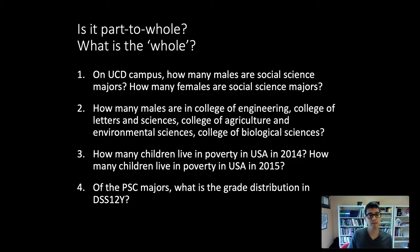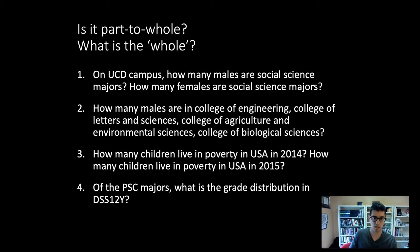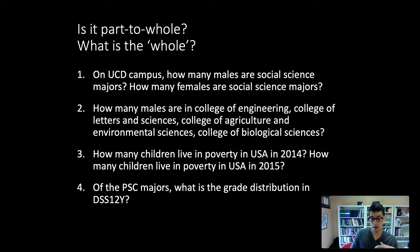Thinking through this, a pie chart isn't ideal for our crime comparison because we're not really thinking of part-to-whole as the key question — the fraction of all crime in a year that's violent. We're actually thinking about comparing the amount of crime that's violent across different years.